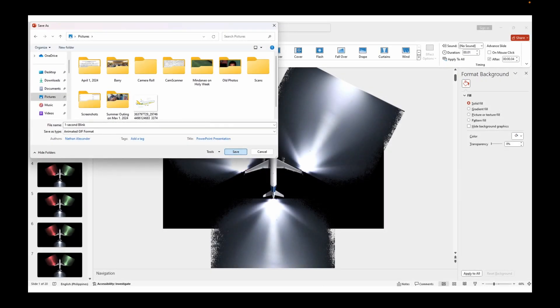And then we will save it as a GIF once you click create GIF. Then you choose your file name. I suggest typing 1 second blink and then click save on the popup box.